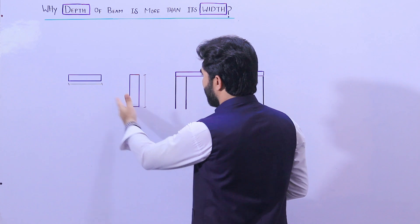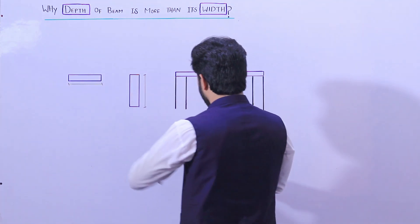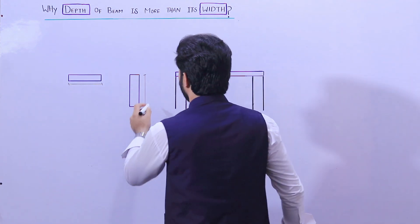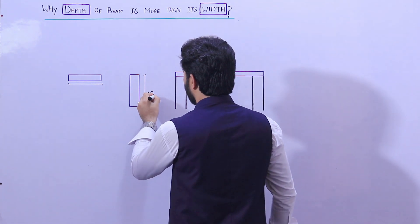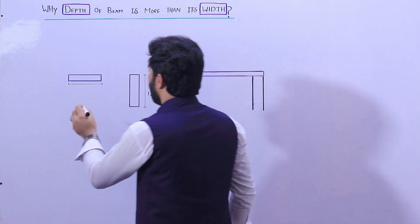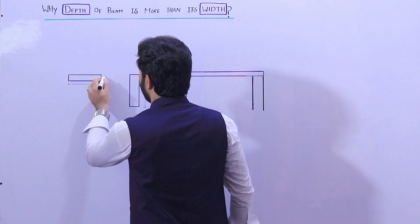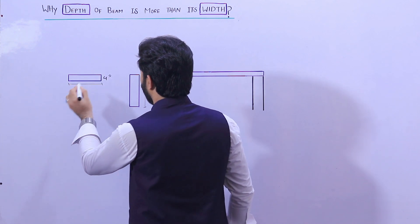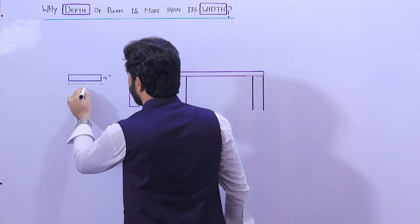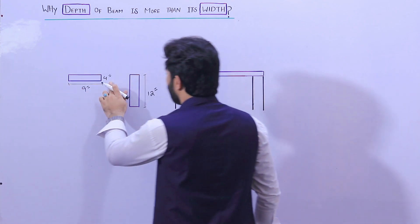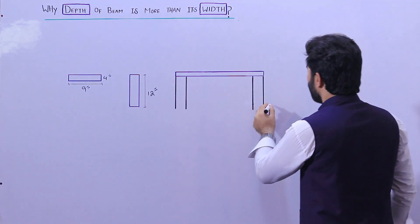As you can see, this is a beam and this is its cross-section. This is its width and this is its depth. Suppose the depth of the beam is 12 inches here, and here it is also 12 inches. This one is 4 inches. The depth here is 9 inches, the width is 9 inches; here the depth is 4 inches, and here the depth is 12 inches.